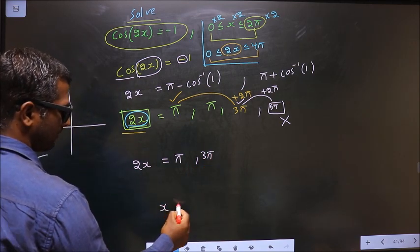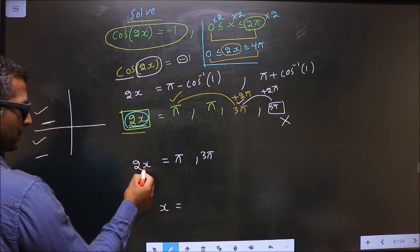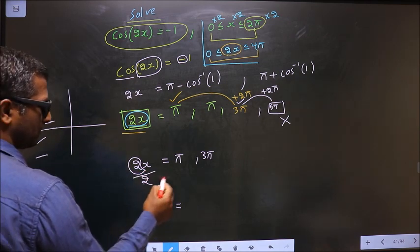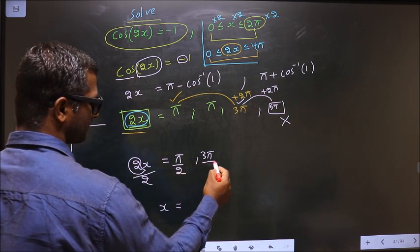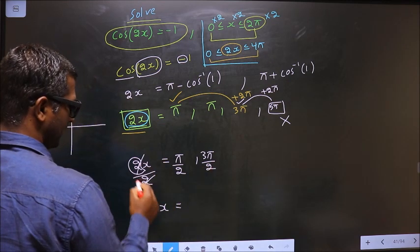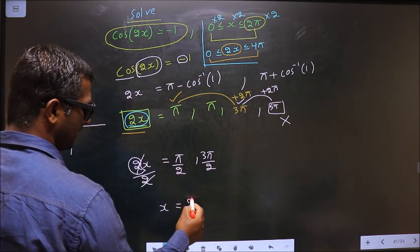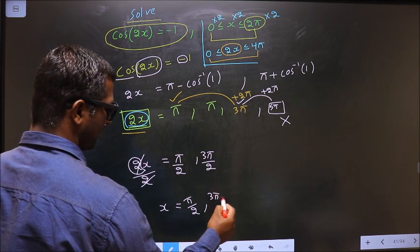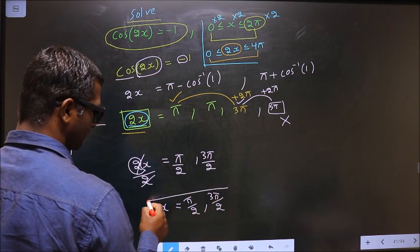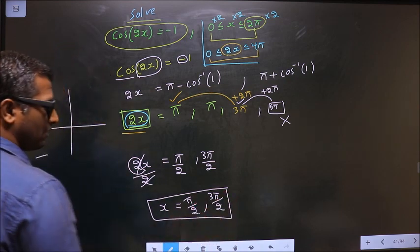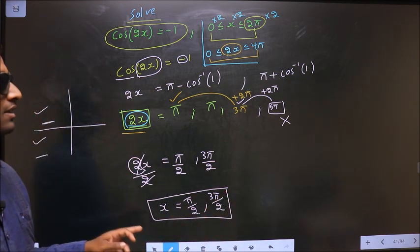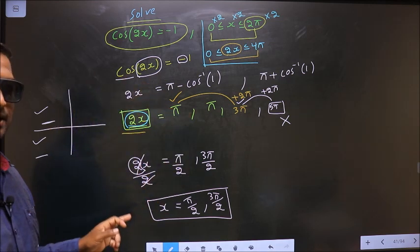Now to get the values for x, we should remove this 2. So to remove the 2, you divide by 2. So here we get x = π/2 and here 3π/2. These are the values for x. This is our answer.